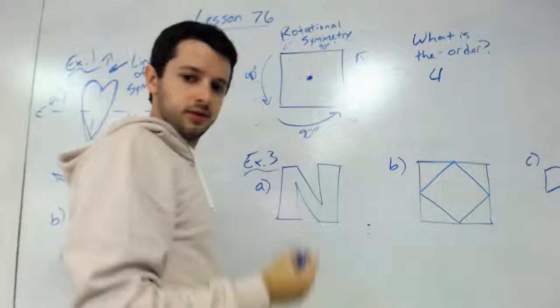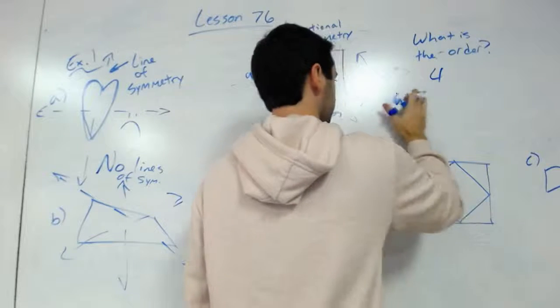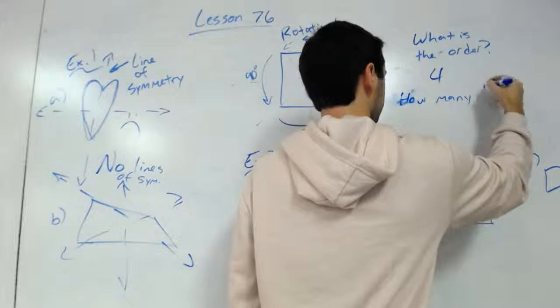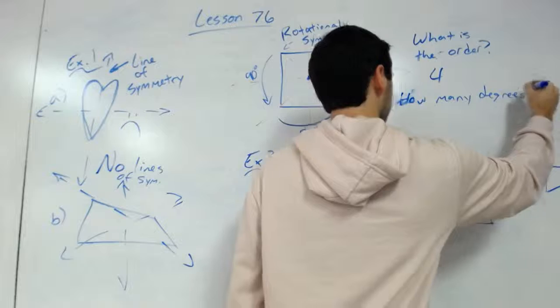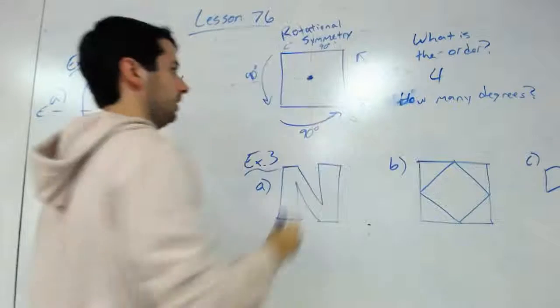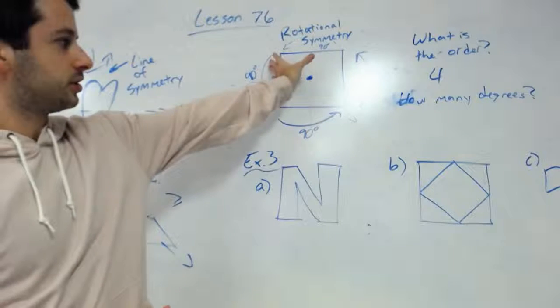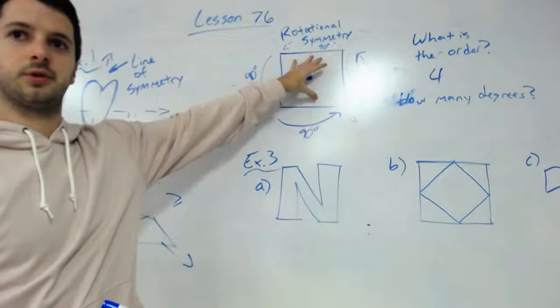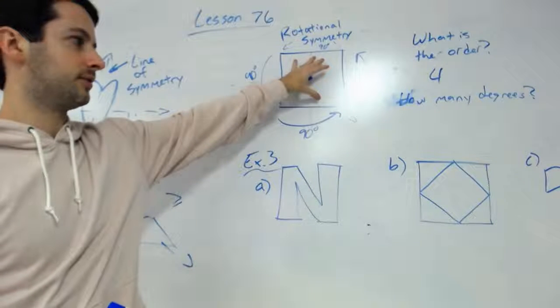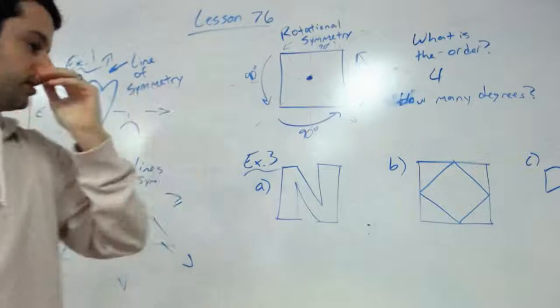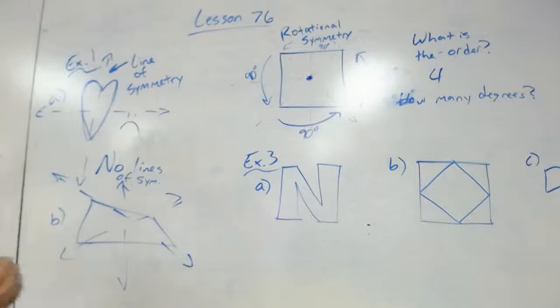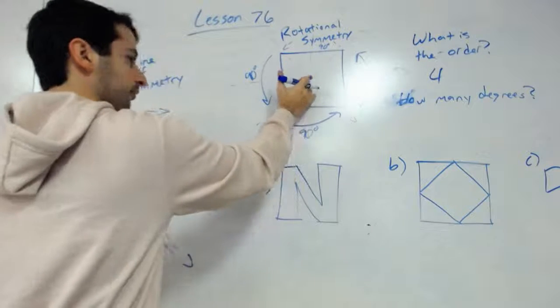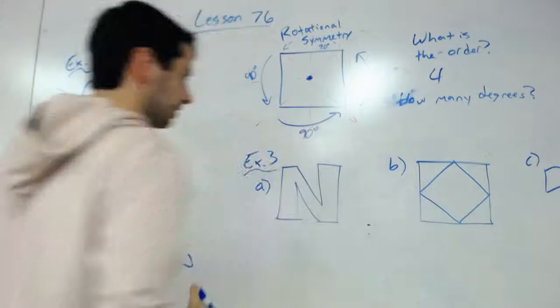The next question you might ask is how many degrees? How many degrees for each turn? Well I kind of drew it here, but each time I turn the square to where it would coincide with itself, it would be 90 degrees. So each order would be a 90 degree rotation. So we would say this has an order of four with 90 degree rotation.